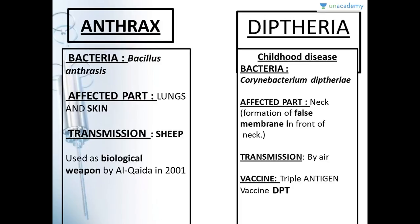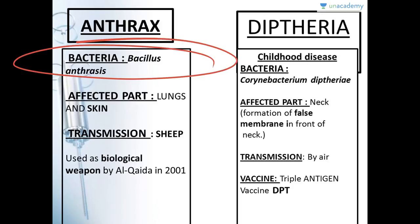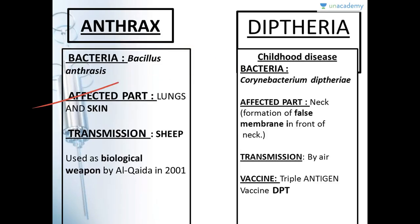Anthrax — the bacteria for anthrax is Bacillus anthracis. It affects lungs and skin. It is transmitted mainly through sheep, so people who live near sheep and goats are more likely to get affected. Anthrax was once used by Al-Qaeda as a biological weapon in 2001.